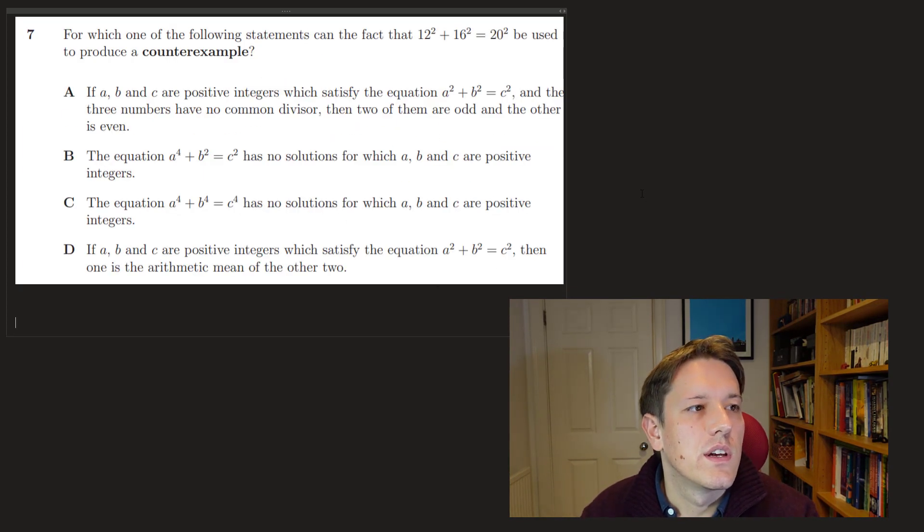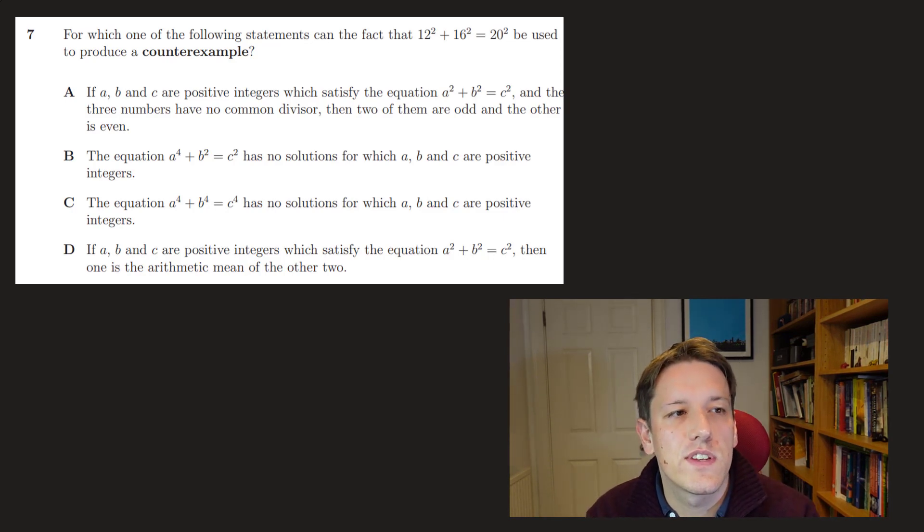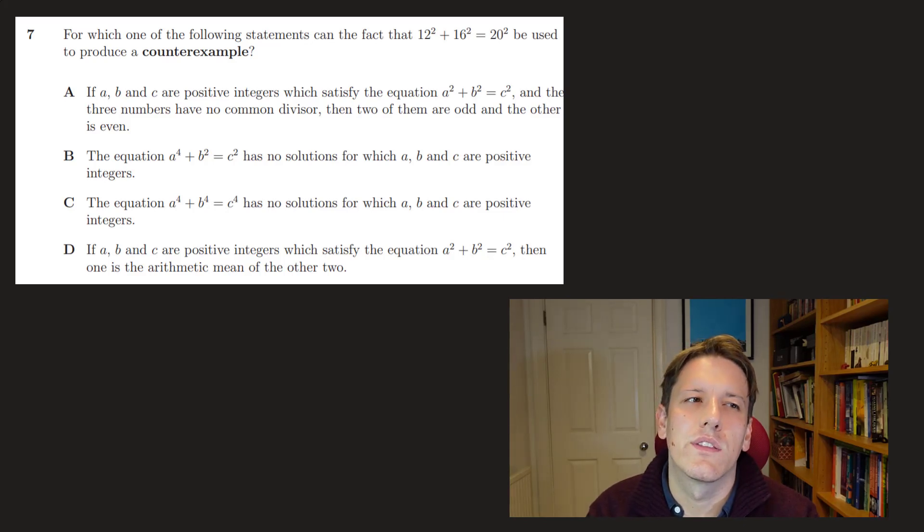Right, question 7. For which of the following statements is the fact that 12 squared plus 16 squared equals 20 squared can it be used to produce a counterexample? If it's going to be a counterexample, it's got to satisfy the premise of the statement, but not the conclusion. In A it says if A, B, and C are positive integers that satisfy A squared plus B squared is C squared. Yeah, that works. And the three numbers have no common divisor. Well, the three numbers do have a common divisor here of 4, so these numbers don't satisfy the premise, so it can't be a counterexample for A.